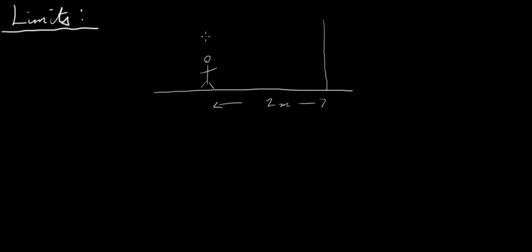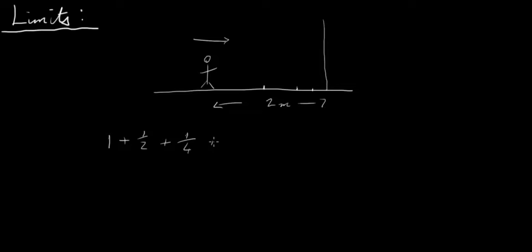Let's say we have a guy walking in a direction towards a wall that is exactly two meters away. He's going to take half the distance each time — he walks one meter first, then half a meter, then a quarter of a meter and so on. So he travels a distance of one plus a half plus a quarter plus one eighth plus one sixteenth and so on.